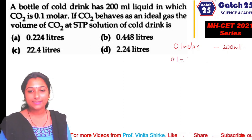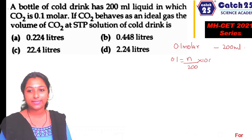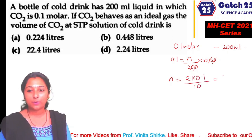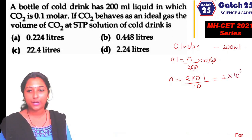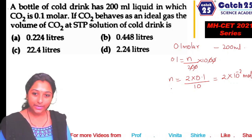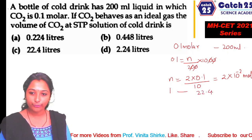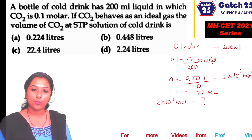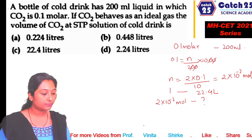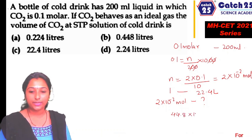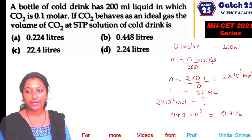Molarity = moles / volume in litres, so moles = 0.1 × (200/1000) = 0.1 × 0.2 = 2 × 10⁻² moles. At STP, 1 mole = 22.4 litres. So volume = 2 × 10⁻² × 22.4 = 0.448 litres, i.e., 4.48 × 10⁻¹ litres. Answer is B.